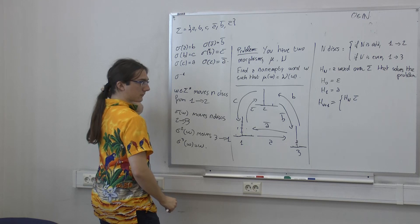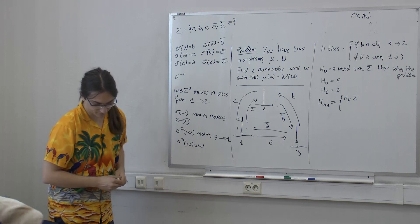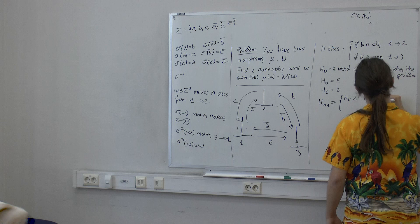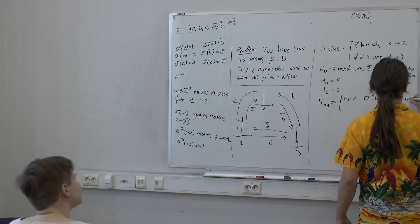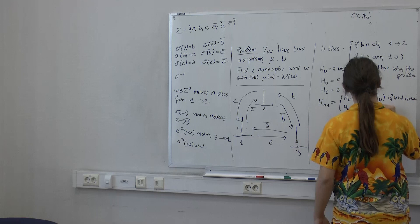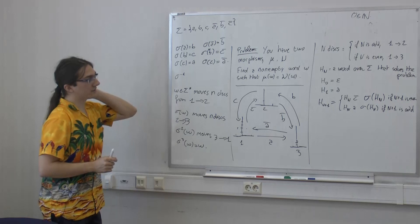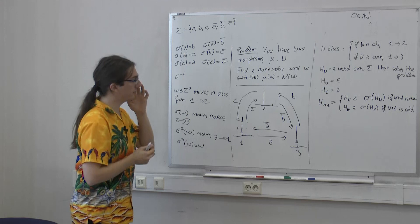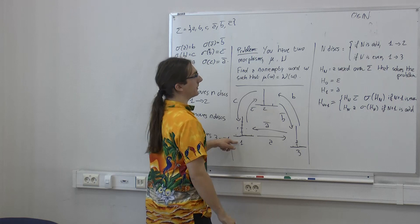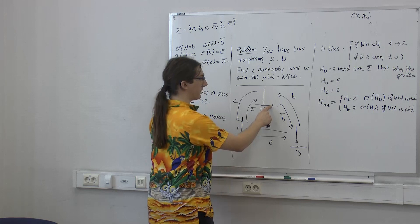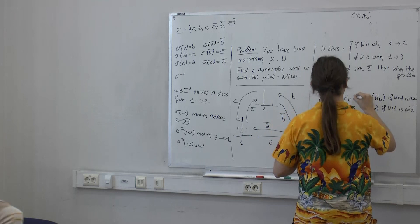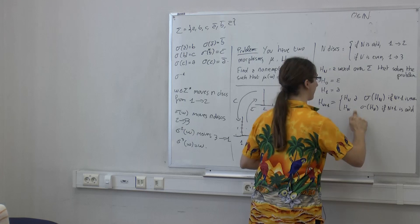Now I'll say a few words about pattern avoidance more generally, and we can try to build a word with no square factor. Taking the alphabet {a, b}: if I start with a and try to extend, putting a gives AA — a square, so I must put b. Then bb would be a square, so I must put a. Now I'm stuck — putting a gives BA·A as a square, and putting b gives B·AB as a square. So it's impossible to build an infinite square-free word over a 2-letter alphabet.